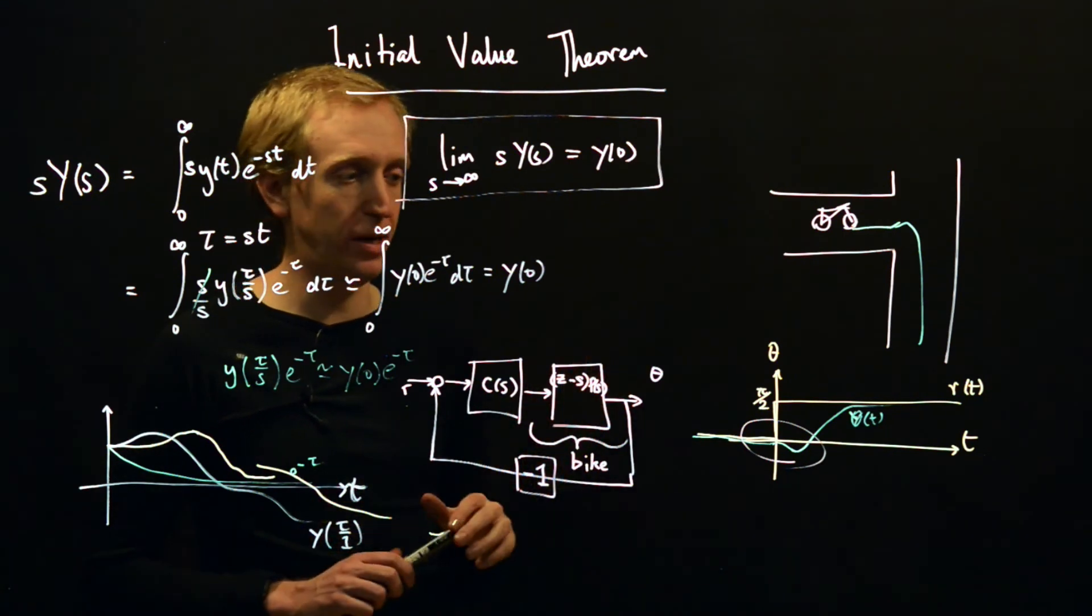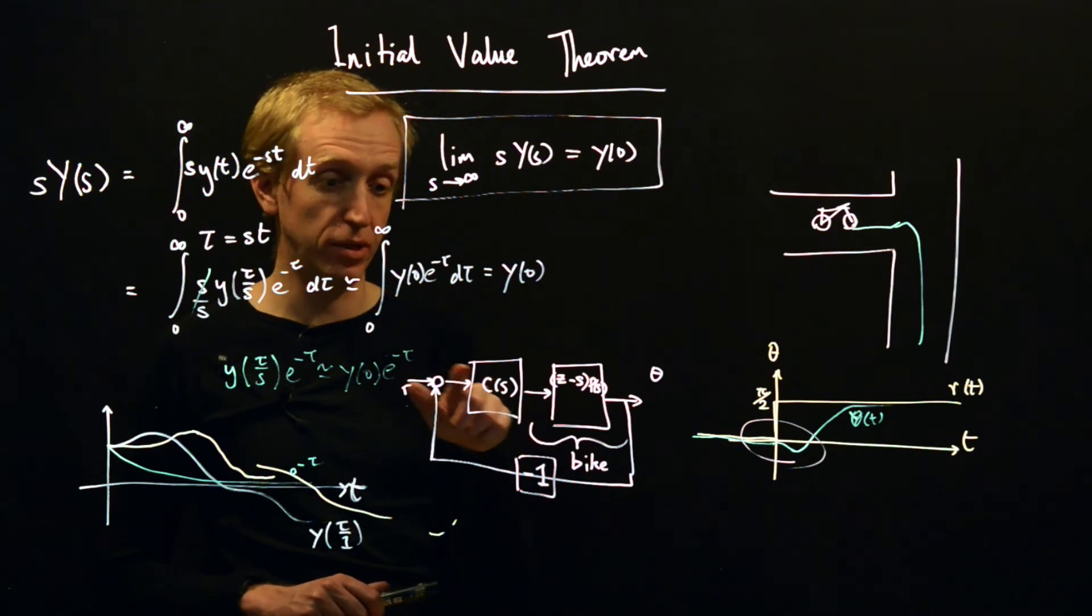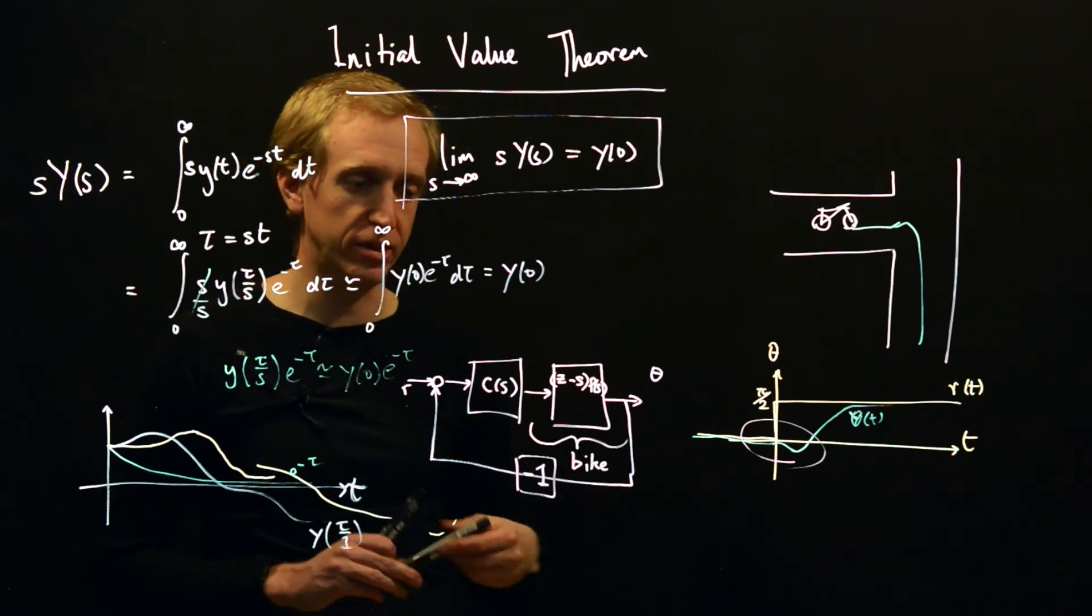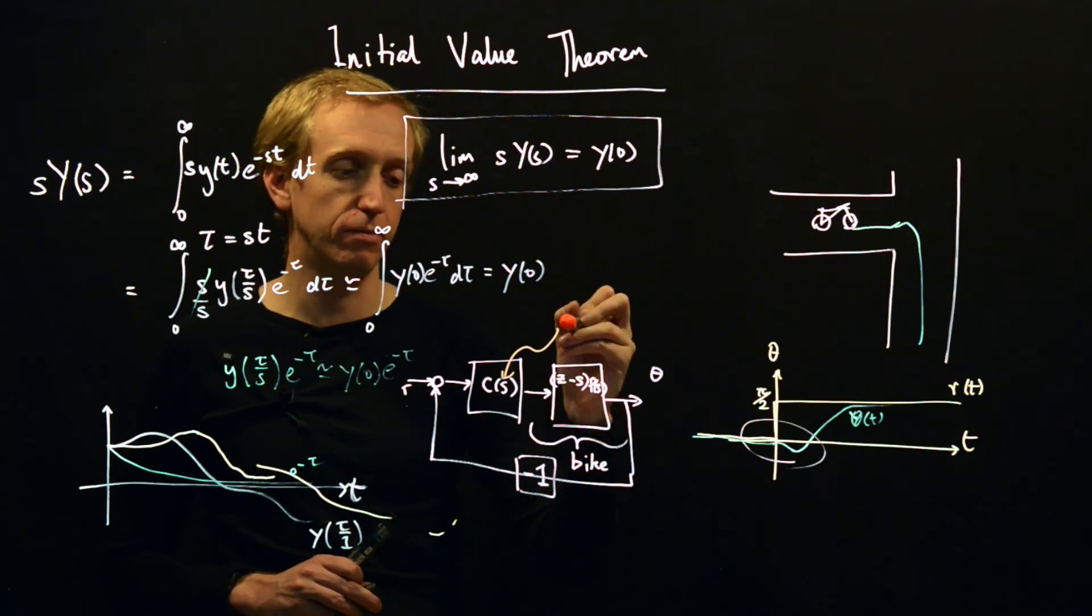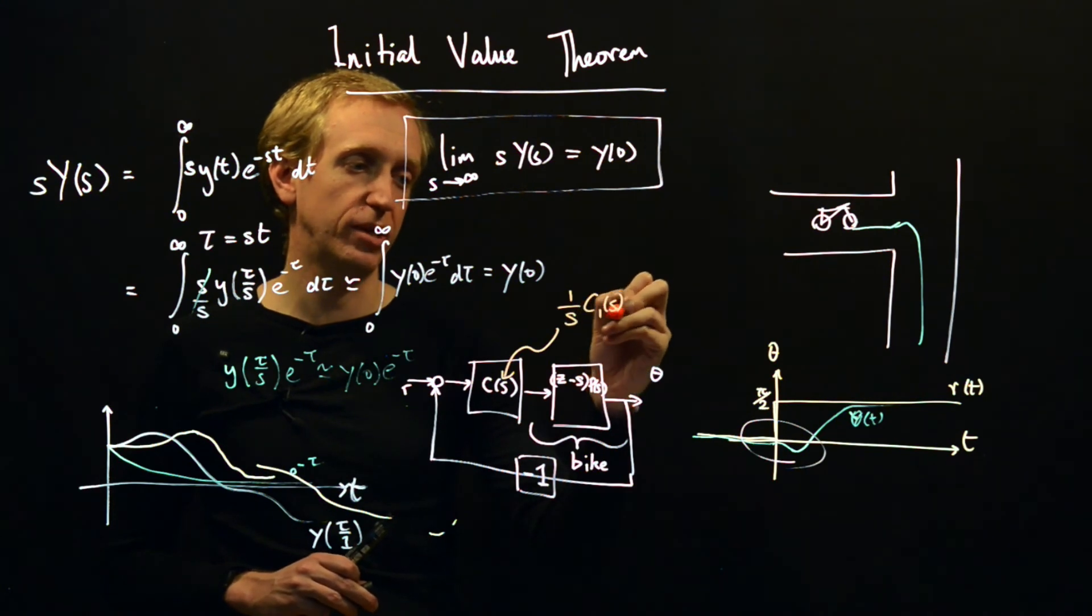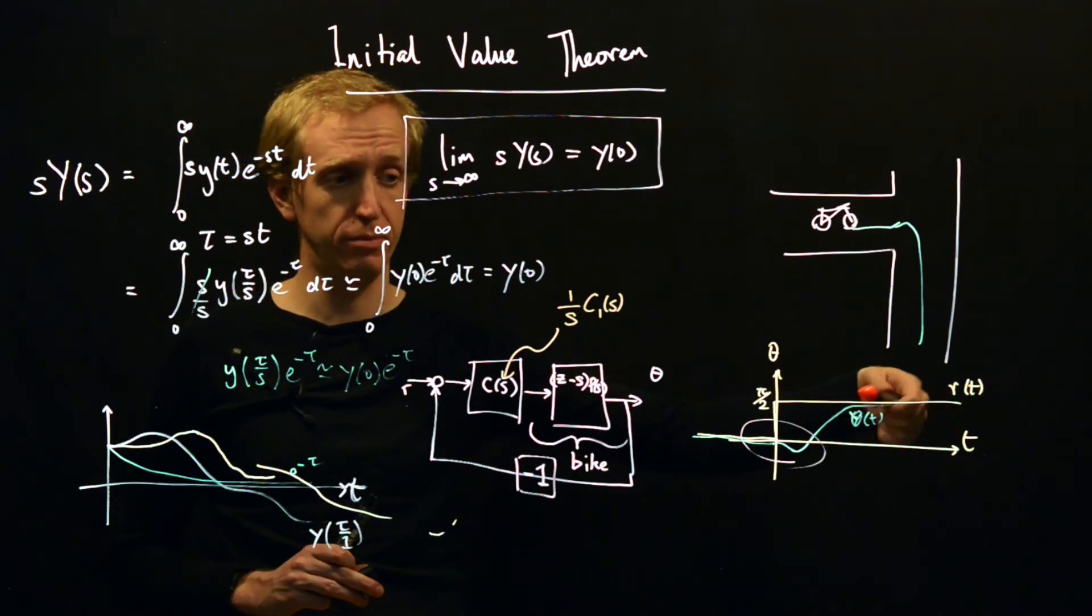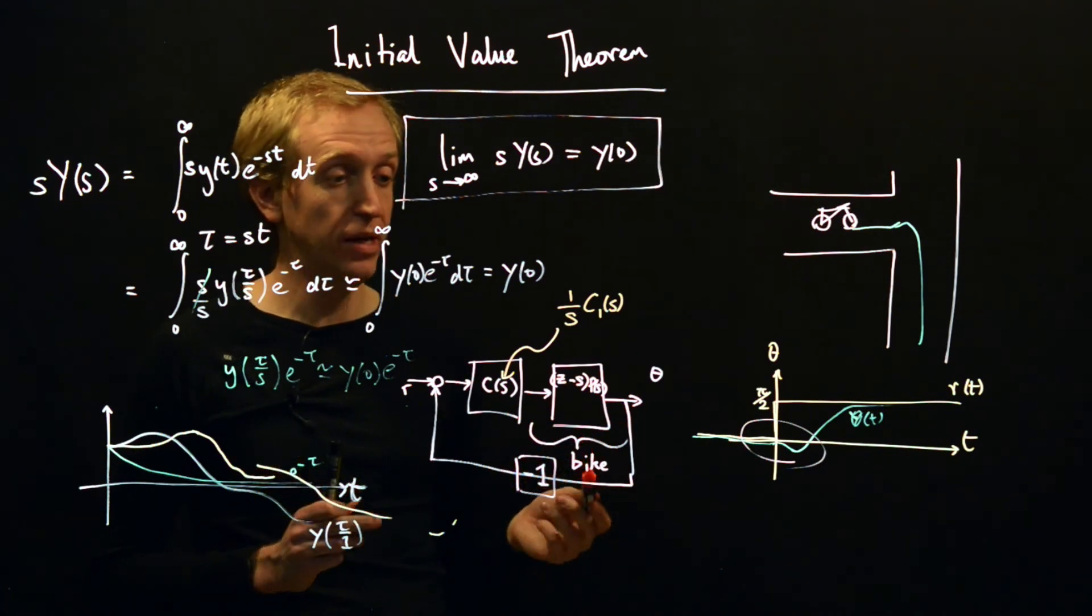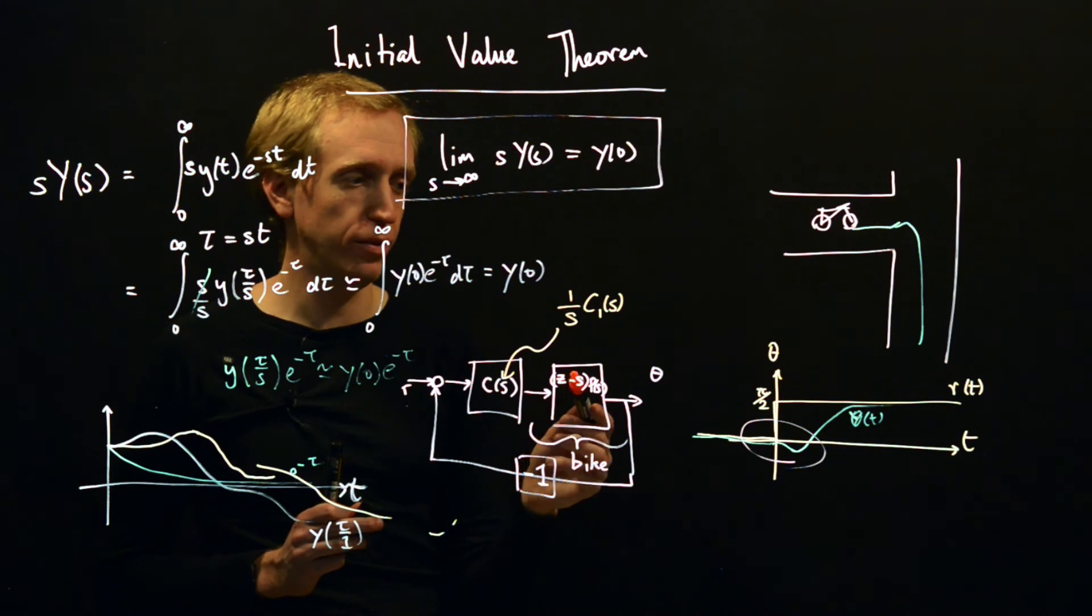So a little puzzle for you. First of all, what does our controller need to have in order for us to be able to track this reference? What you need to show there is that the controller has to have an integrator in it. So the controller has to be the form 1/s multiplied by some other transfer function C₁(s) in order for the long term behavior to be okay. And you can explain that with the final value theorem.